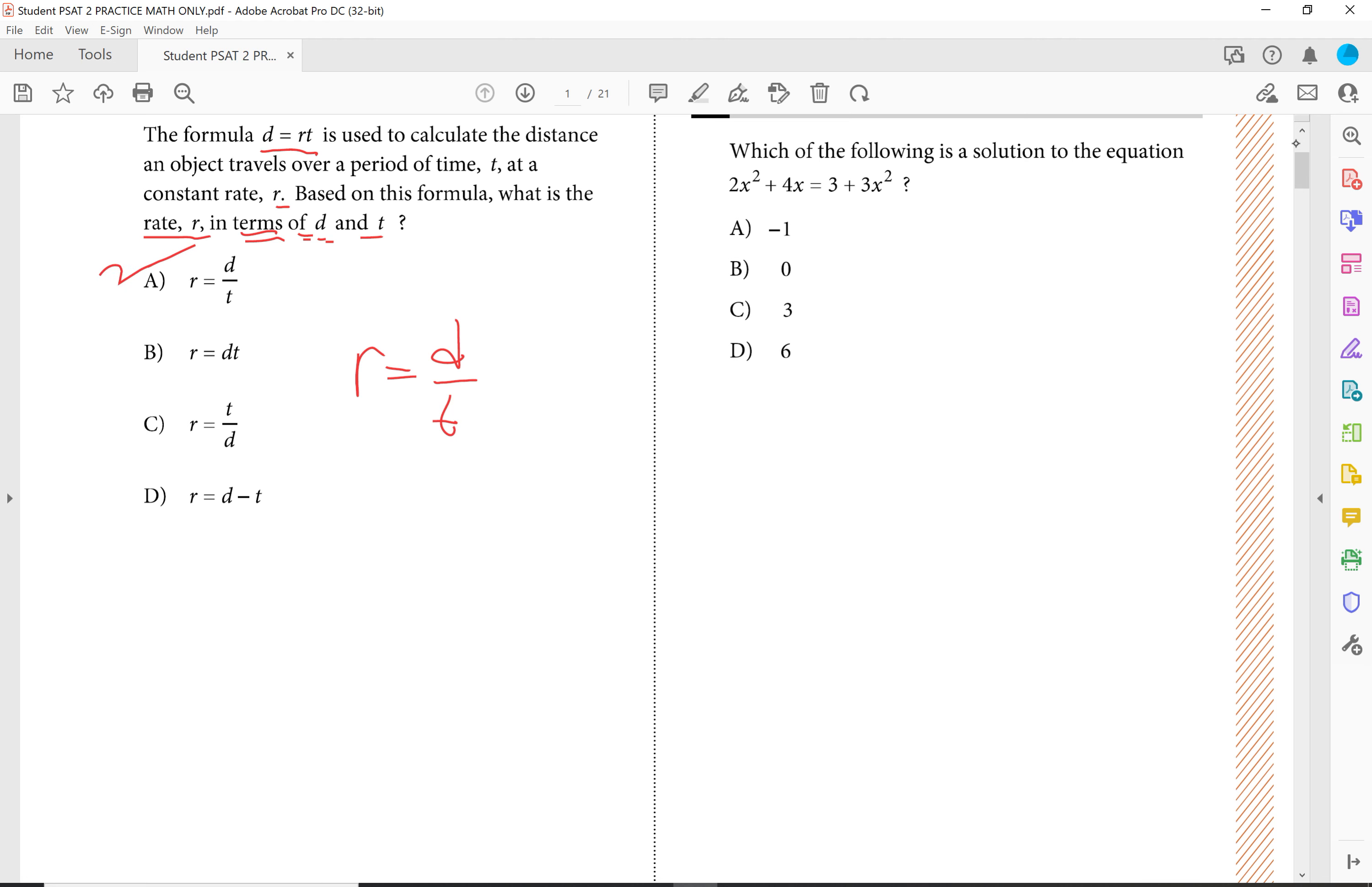because that means that you want r is equal to d over t. Answer choice a. How we get that is that d is equal to r times t. And if I want to just solve for r, which is what this question really is asking, you're going to divide by t on both sides, canceling this out. So that should have been fairly easy for all of you.